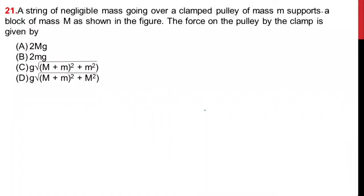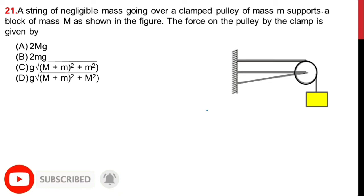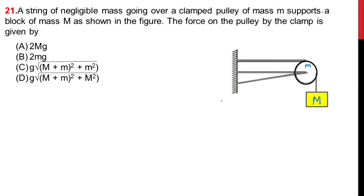Hello everyone. A string of negligible mass going over a clamped pulley of mass M supports a block of mass M as shown in the figure. This is the capital M and this is the small m — mass of the pulley and mass of the block. The force on the pulley by the clamp is given by — we have to calculate how much force is applied by this clamp.